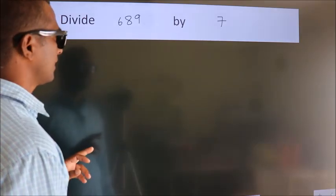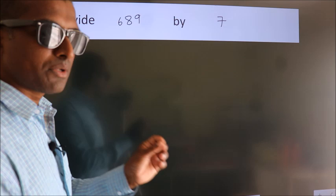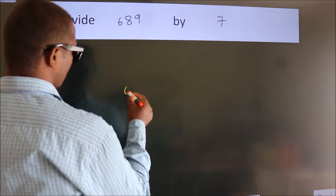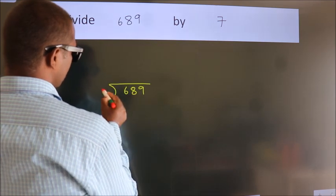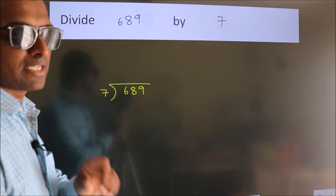Divide 689 by 7. To do this division, we should frame it in this way: 689 here, 7 here. This is your step 1.